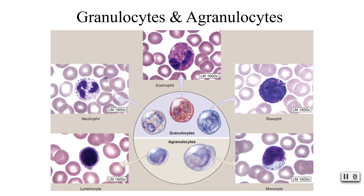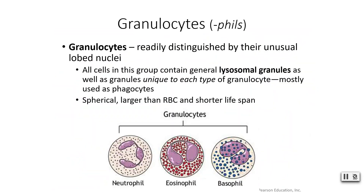We've got five leukocytes: three are granulocytes and two are agranulocytes. Granulocytes have very visible granules and come in three varieties: neutrophils, eosinophils, and basophils. All of these granules are lysosomal granules — lysosomes help us break things down and destroy them. Granulocytes tend to be round, larger than your red blood cells, and have a much shorter lifespan than red blood cells as well.